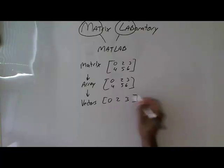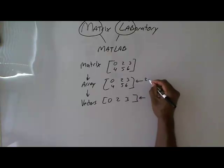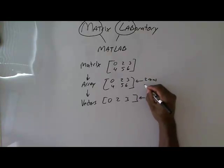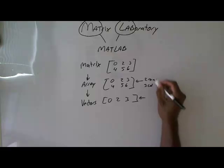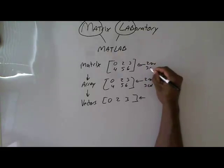So they would have only one row. So this one has two rows, three columns, right? This one has two rows, three columns.